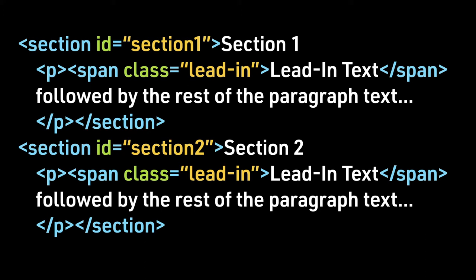This example illustrates the use of the class attribute. We have two sections, each with a unique ID attribute — Section 1 and Section 2. But each section has paragraph text that has lead-in text that we style differently. So to target that text for styling that is different from the rest of the paragraph text, we use a class attribute. We have called our class attribute lead-in, so we would use .lead-in to target that span of text.